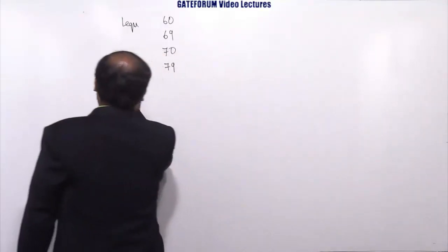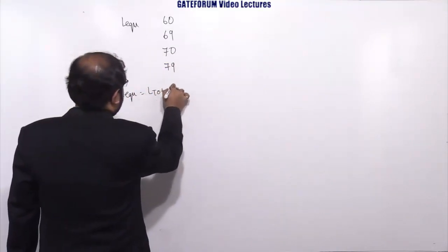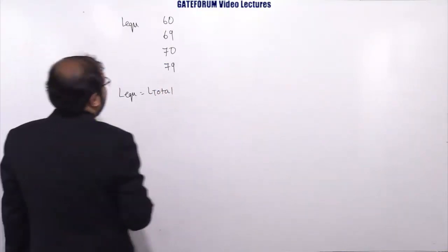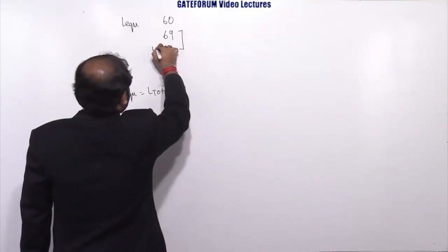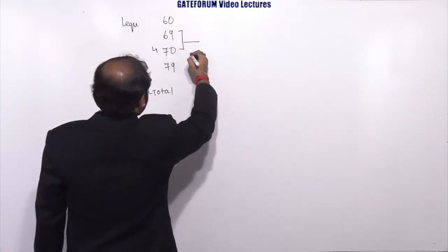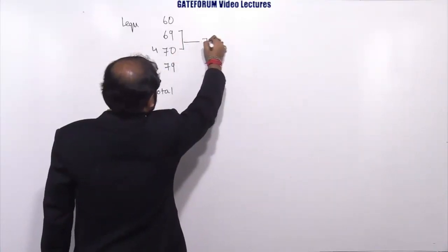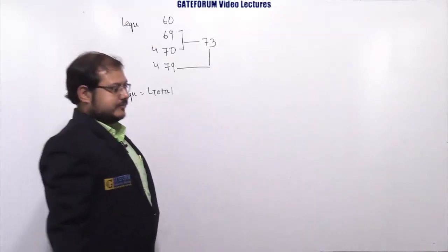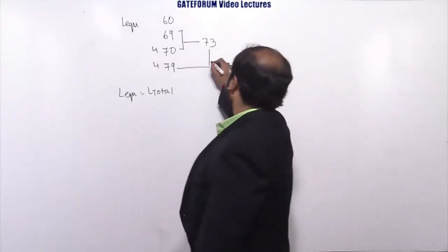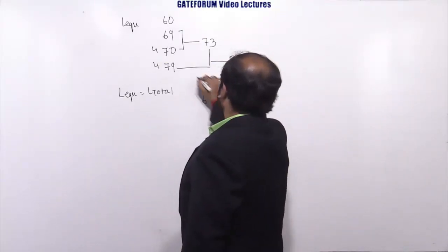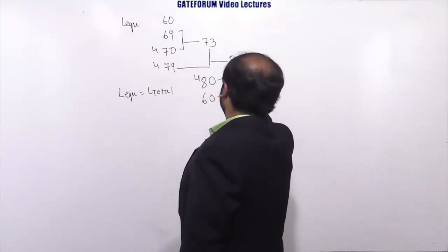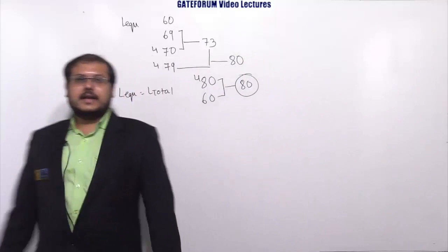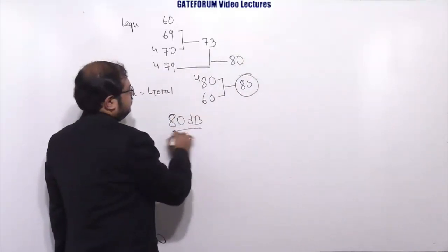L equivalent will be L total only as they are not mentioning any kind of working time. For calculating the total sound level, we can easily go for the shortcut method. If you take these two, 70 will be L1, need to add 70 plus 69, difference is 1, need to add 3, it is 73. If you take these two, 79 is the L1, difference is 6, you need to add 1, it will be 80. And between 80 and 60, 80 is the L1, difference is 20, need to add 0. Final answer is 80 only. Your final answer will be 80 decibel.